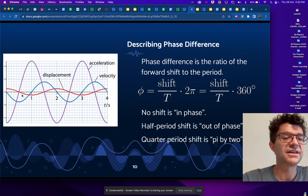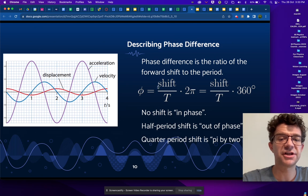If you look at the displacement as the primary graph here, the one that's shown in red, then the acceleration graph is moved forward by one second, that's its shift. And the period is two seconds. So this would be what is called a pi phase shift or being out of phase because the shift one second divided by the period is two times two pi would be just pi. So a pi phase shift is known as half a period or is out of phase.